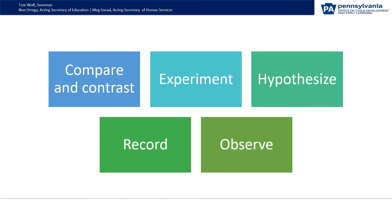Compare and contrast: younger children can compare and contrast things like size, shape, color, hot and cold, fast and slow. Even infants will benefit from these concepts and words.